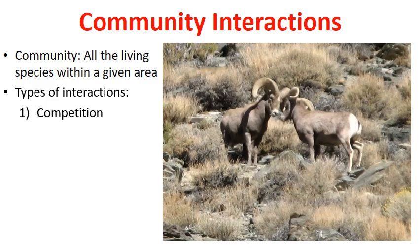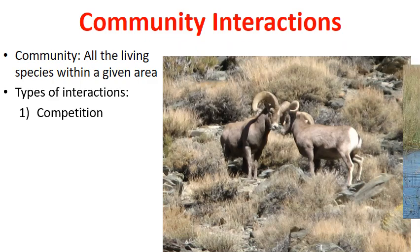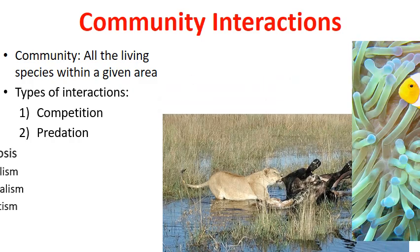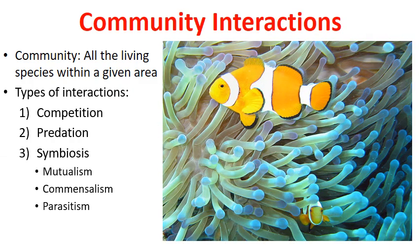So how does life interact with one another? Like these two rams butting heads, they're probably competing for territory. Another form of interaction would be predator and prey, where one organism simply eats another. And then the third type of community interaction would be the various kinds of symbiosis. These are the subjects of our video today.